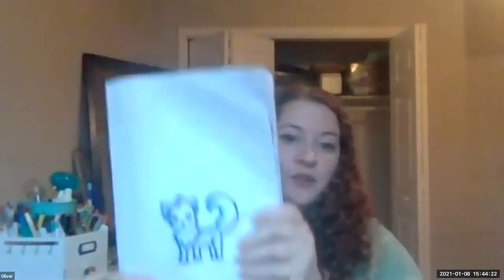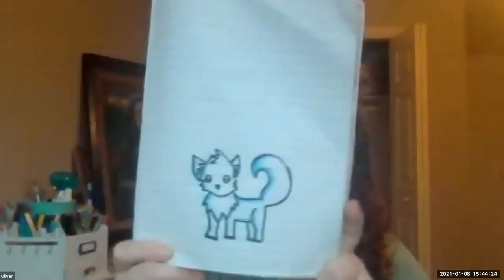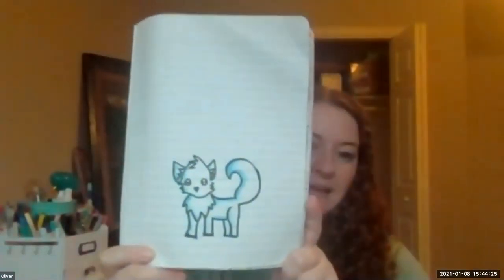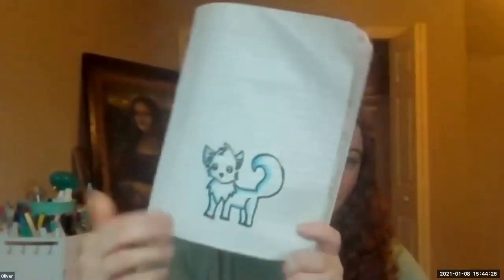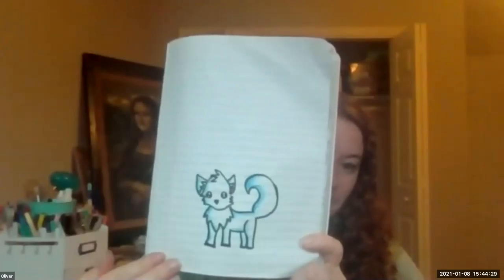Your goal after you've picked your animal is to draw it as best you can. I would prefer you draw this on paper, but if you don't have any paper, you can use Auto Draw. Once you've made your animal, make sure you outline it in Sharpie. I'm leaving a lot of space for my background.